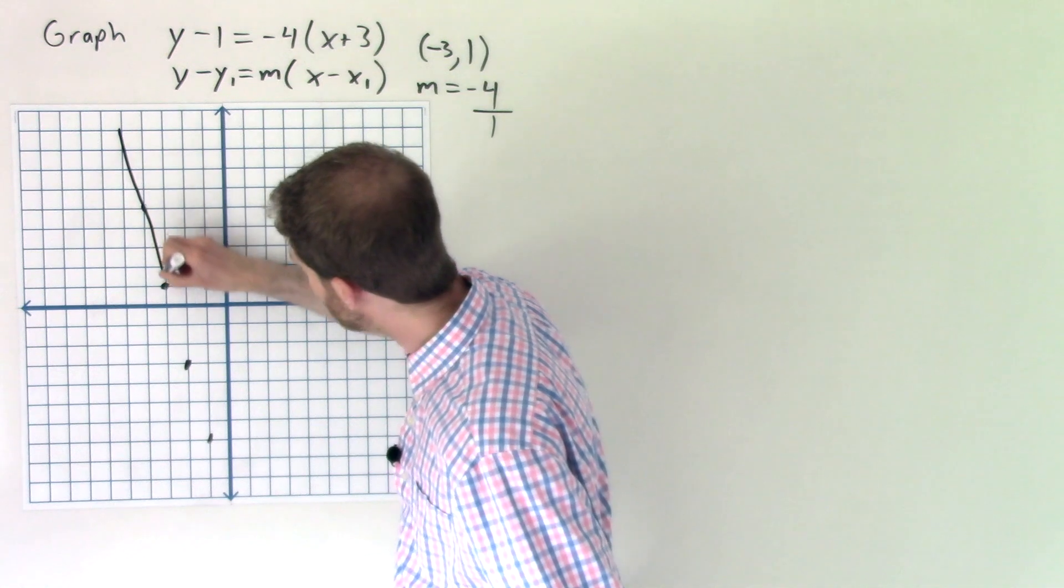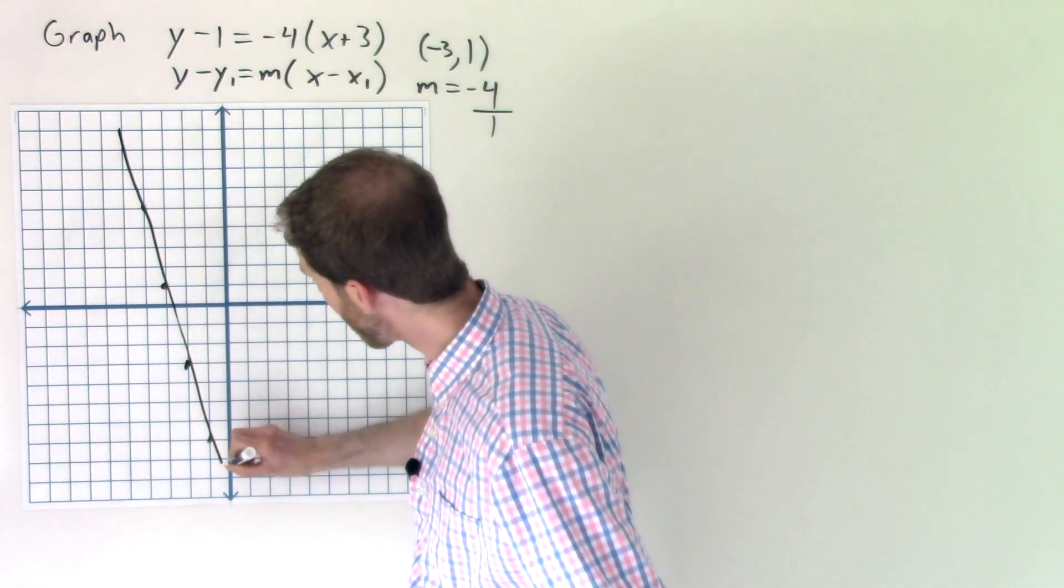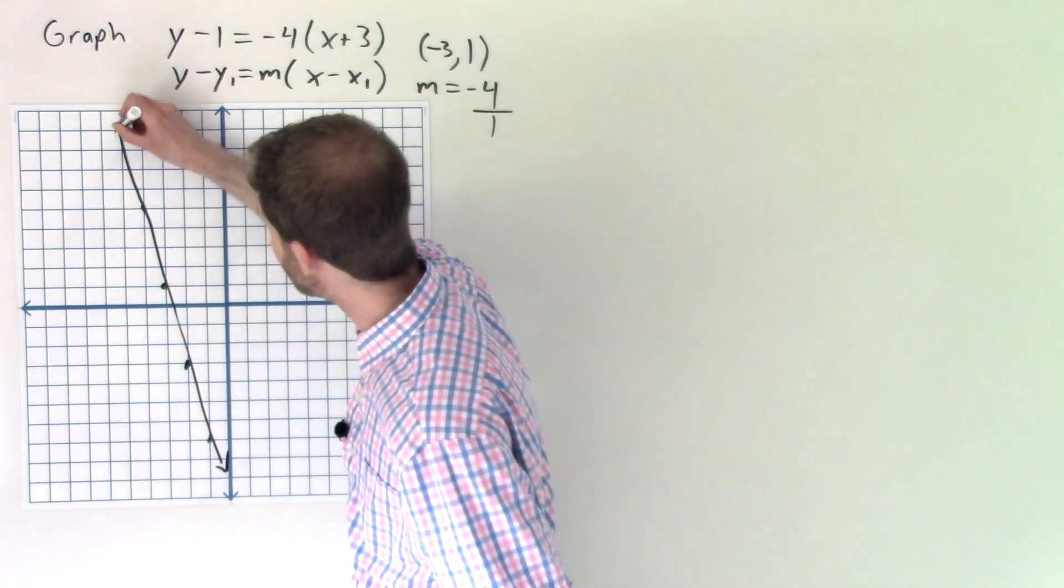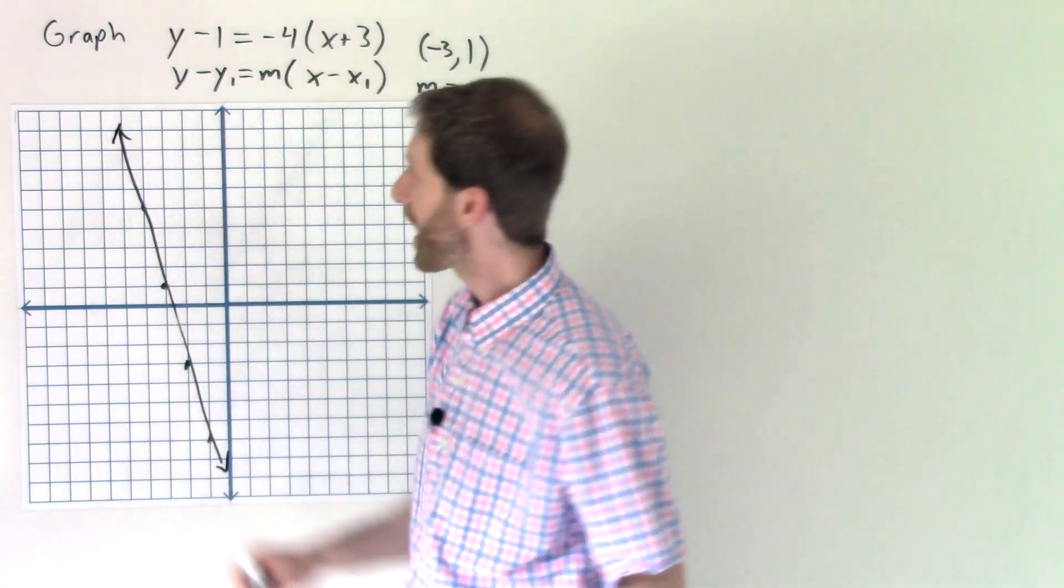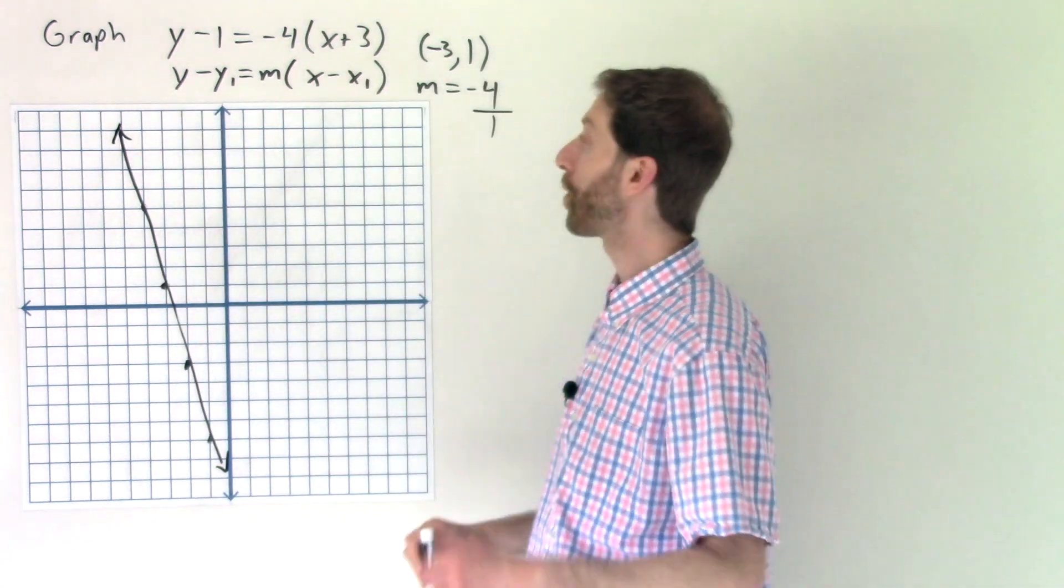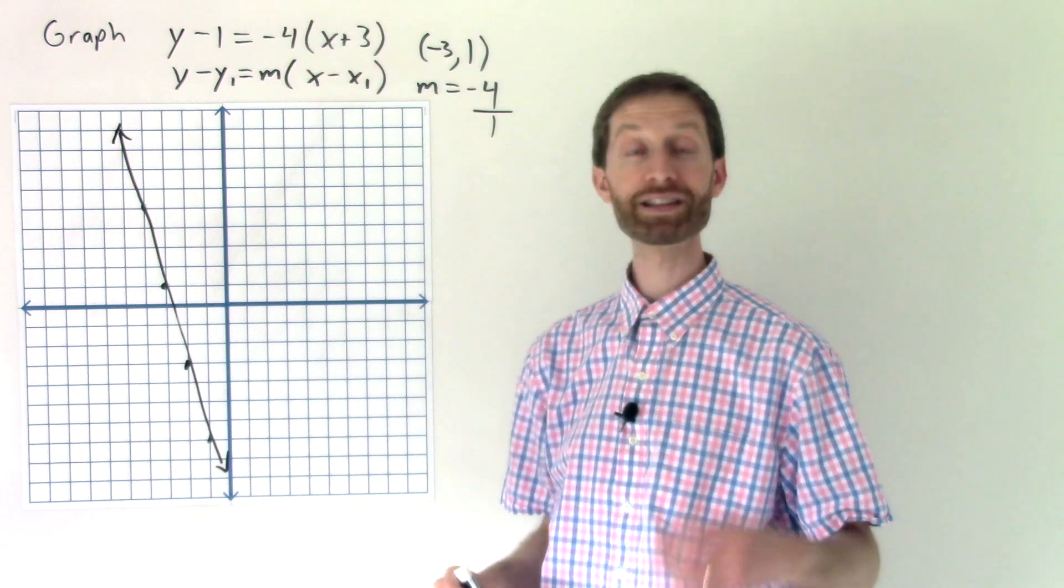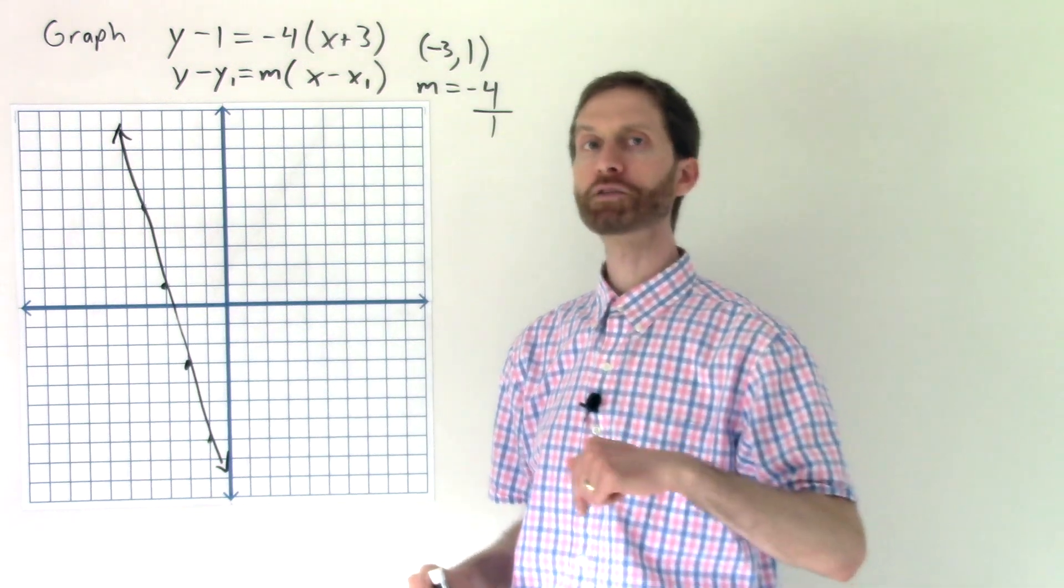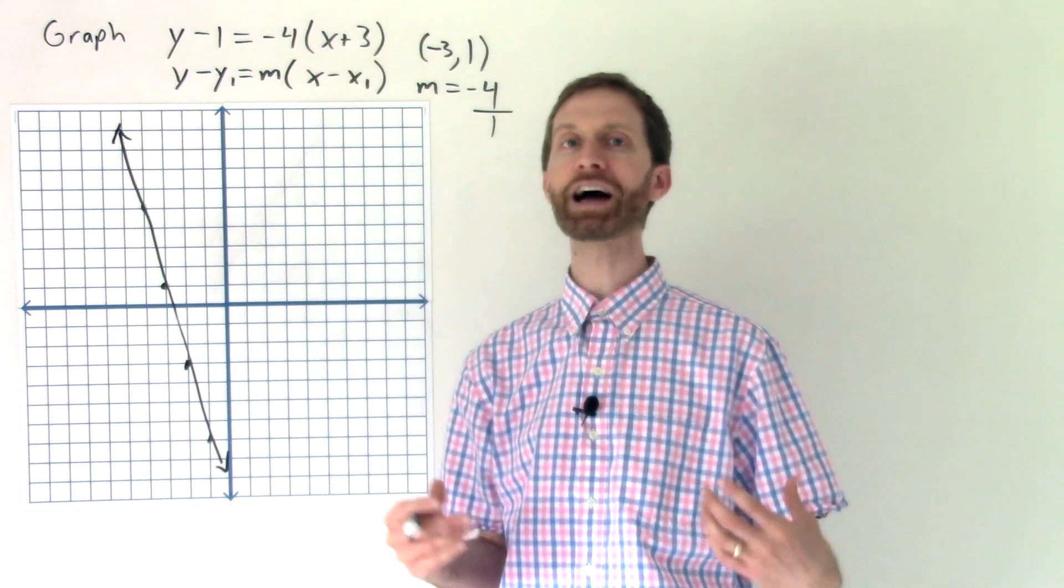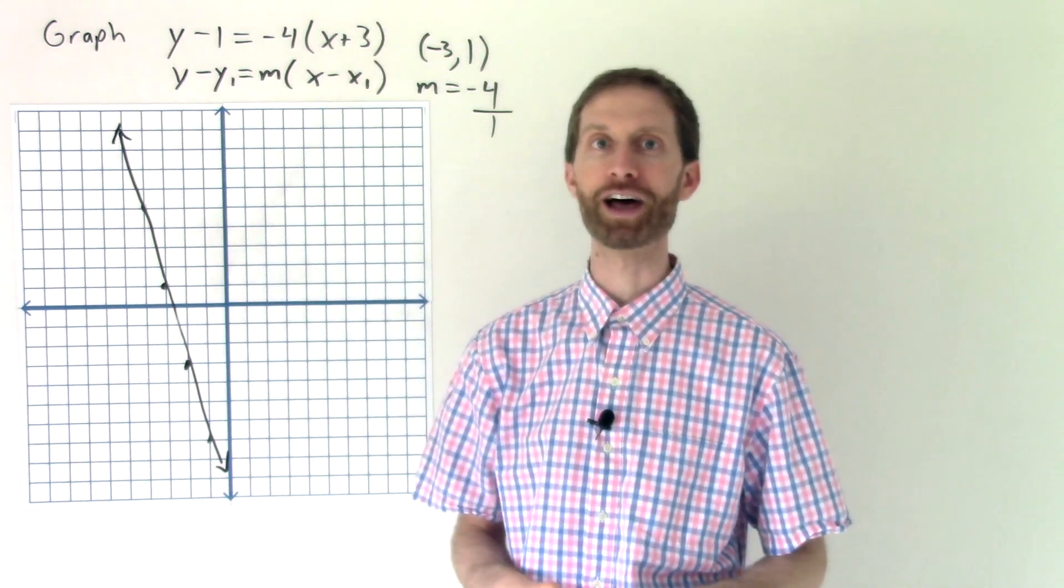Okay, so we've got those points. Try your best to connect that line. I'm not the best at it, as you can see. And that is how you graph a point-slope form line. It's not so bad. On the flip side of this video, I'm going to do one more example just to make sure you've got it locked away. See you on that other side.